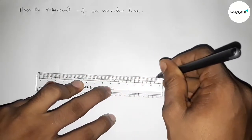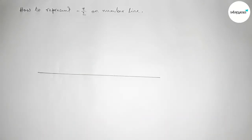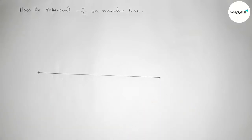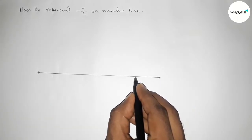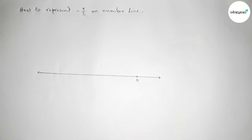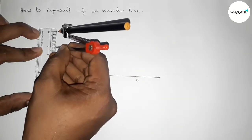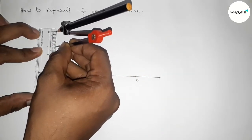So first drawing here a line of any length and taking arrow mark on both side. Now first taking here number zero here, next by using scale and I am taking here a length two centimeter by using compass.